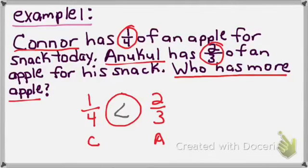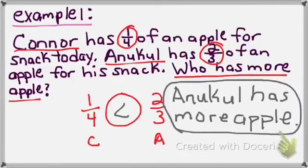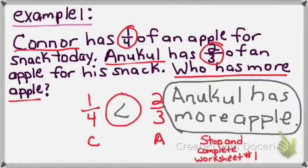The question says, who has more apple? I see C — Connor has less than Anacle. So the answer would be: Anacle has more apple. That's the final answer. Please stop the video and complete worksheet number one right now.